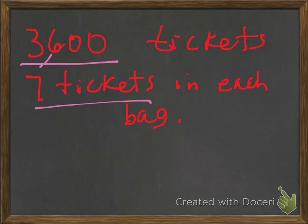All right, how'd you do? So we go back to, again, we have 3,600 tickets and we want to put 7 tickets in each bag. So we're going to be looking at this number right here, 36.